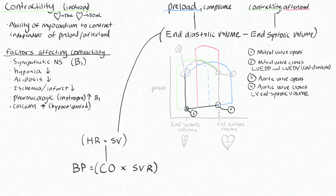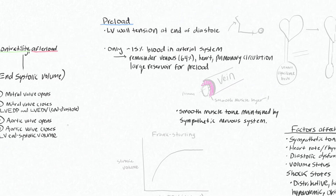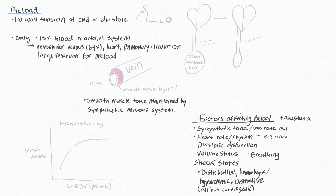We left the last video talking about contractility, still needing to go over preload and afterload. Let's talk about preload. Preload is the LV wall tension at the end of diastole. It makes more sense to think about this in terms of something we can physically measure easily, which would be the left ventricular end-diastolic pressure or the left ventricular end-diastolic volume.